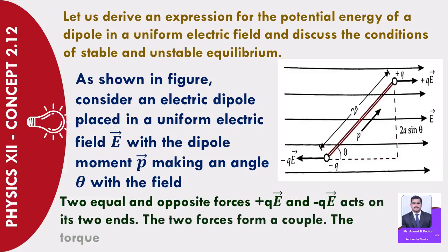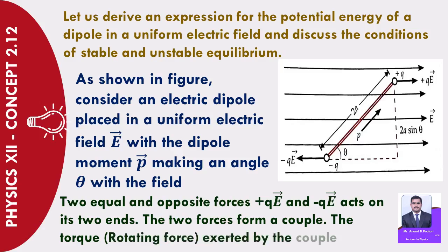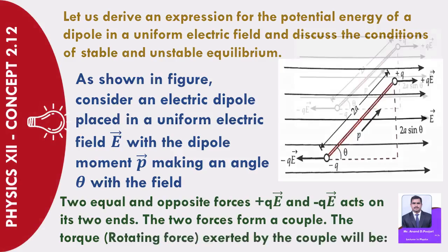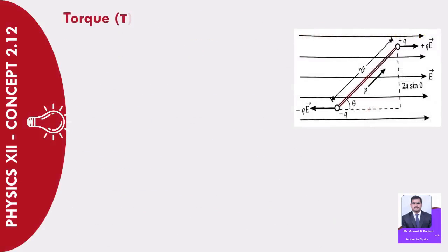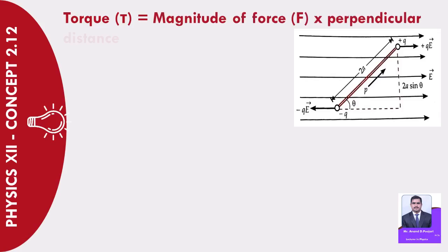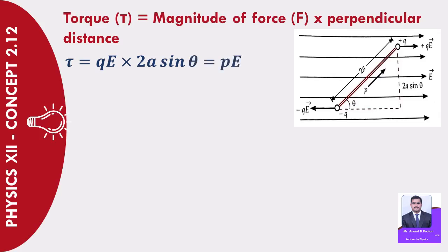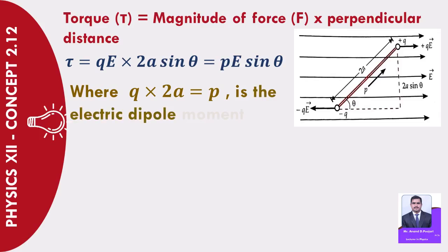The two forces form a couple. The torque (rotating force) exerted by the couple will be: Torque τ = magnitude of force F × perpendicular distance. τ = QE × 2a·sin θ = PE·sin θ, where QE × 2a = P is the electric dipole moment.